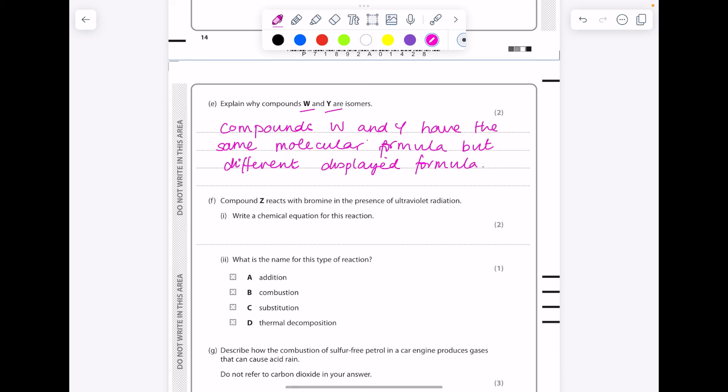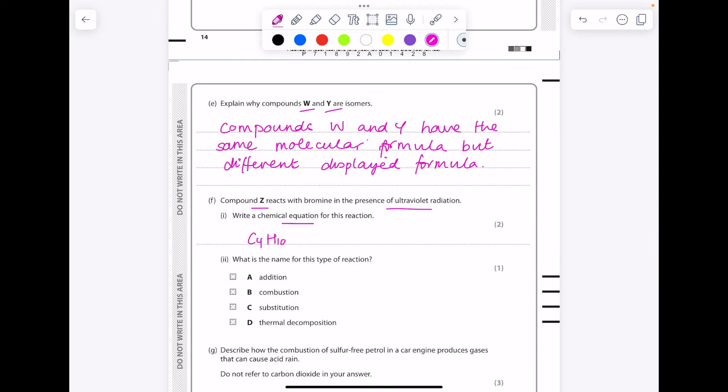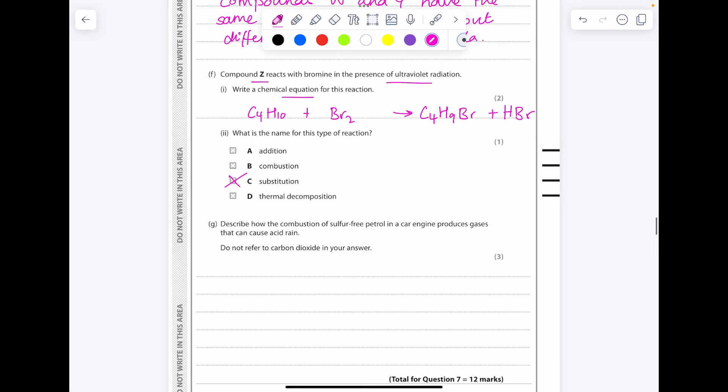Compound Z reacts with bromine in the presence of ultraviolet radiation. Write a chemical equation for this reaction. So Z is C4H10. I'm reacting it with bromine. Remember, bromine is diatomic. What happens is you produce HBr as a byproduct and then just sort out everything else, so it becomes C4H9Br. So make sure all your atoms add up on the left and right side. What is the name for this type of reaction? It's substitution because you're swapping out one of those hydrogens for bromine.